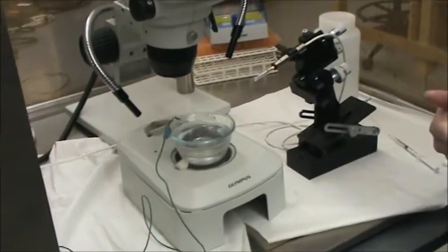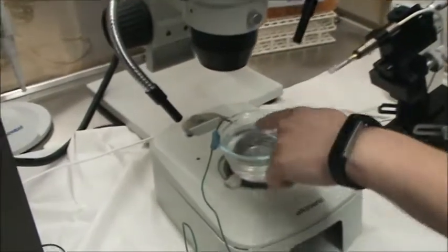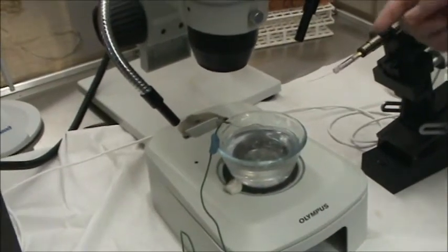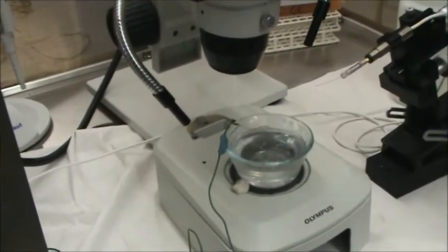When your partner brings your crayfish, you're going to want to put it over on this side of the dish so you have more freedom to get the electrode in because you don't want to hit the edge.